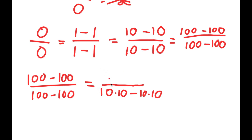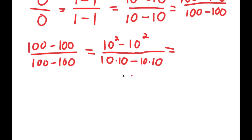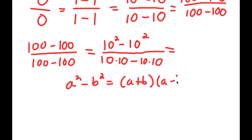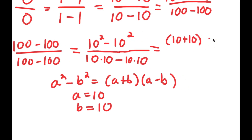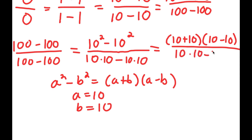And for my numerator, 10 times 10 is the same thing as 10 squared. So I'm going to write 10 squared minus 10 squared. The reason I did this is because if I have something in the form a squared minus b squared, this is equal to a plus b times a minus b. In this case, a is 10 and b is 10 as well. So I get 10 plus 10 times 10 minus 10, and I have this over 10 times 10 minus 10 times 10.